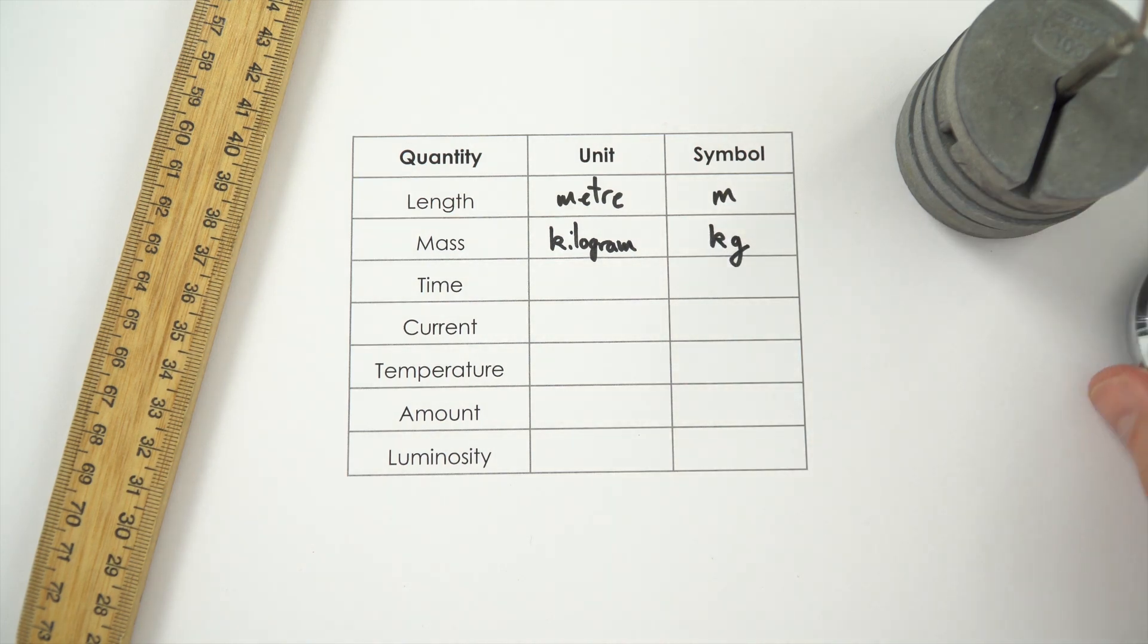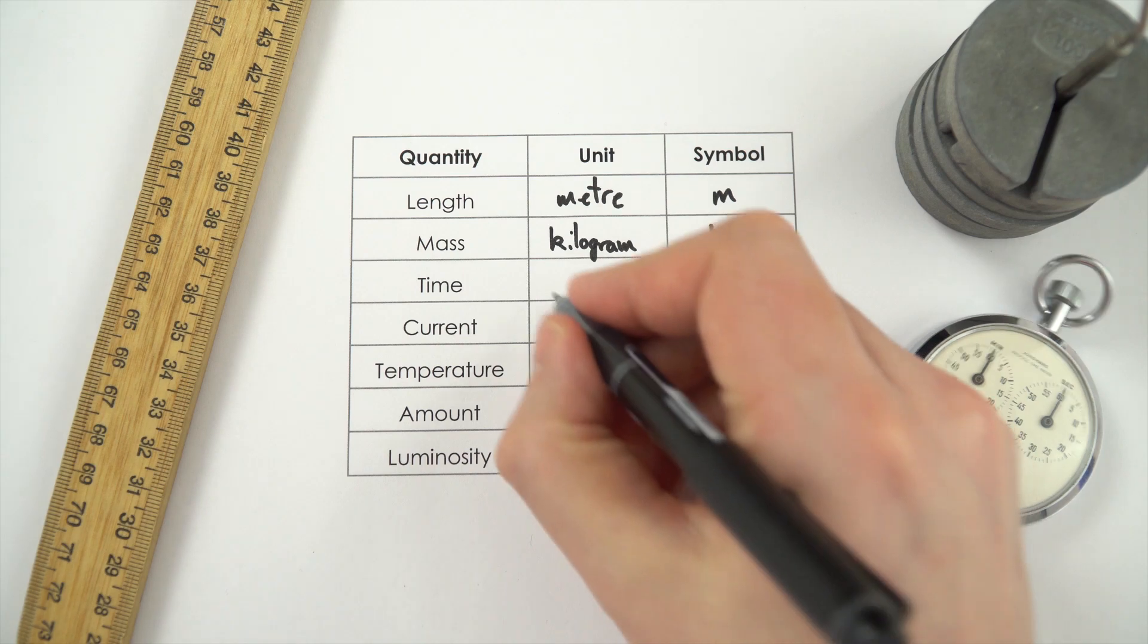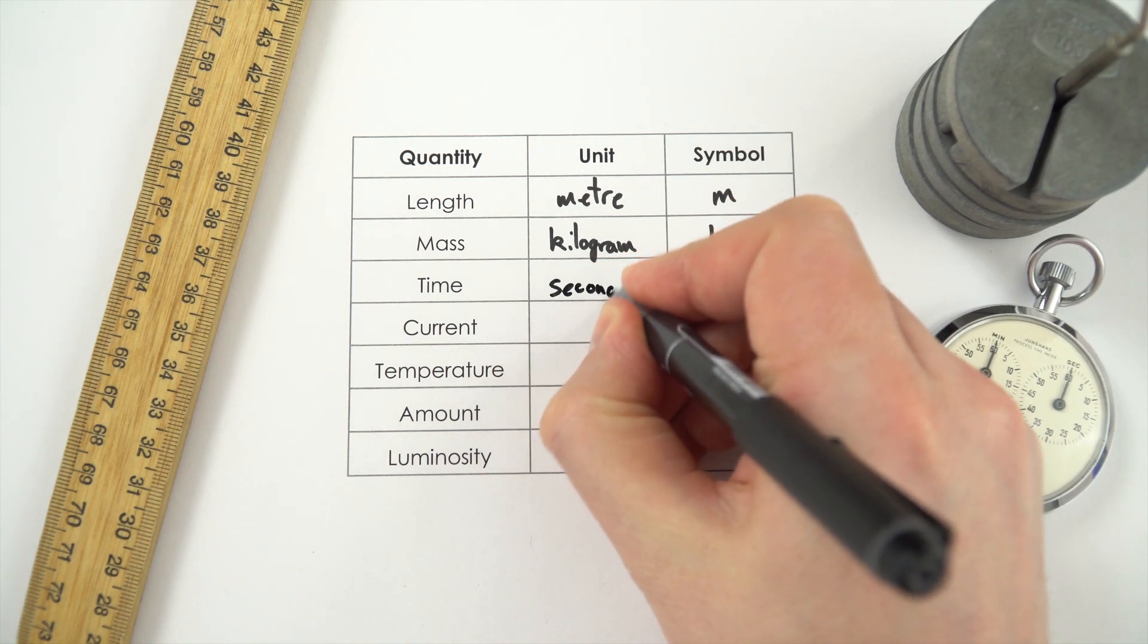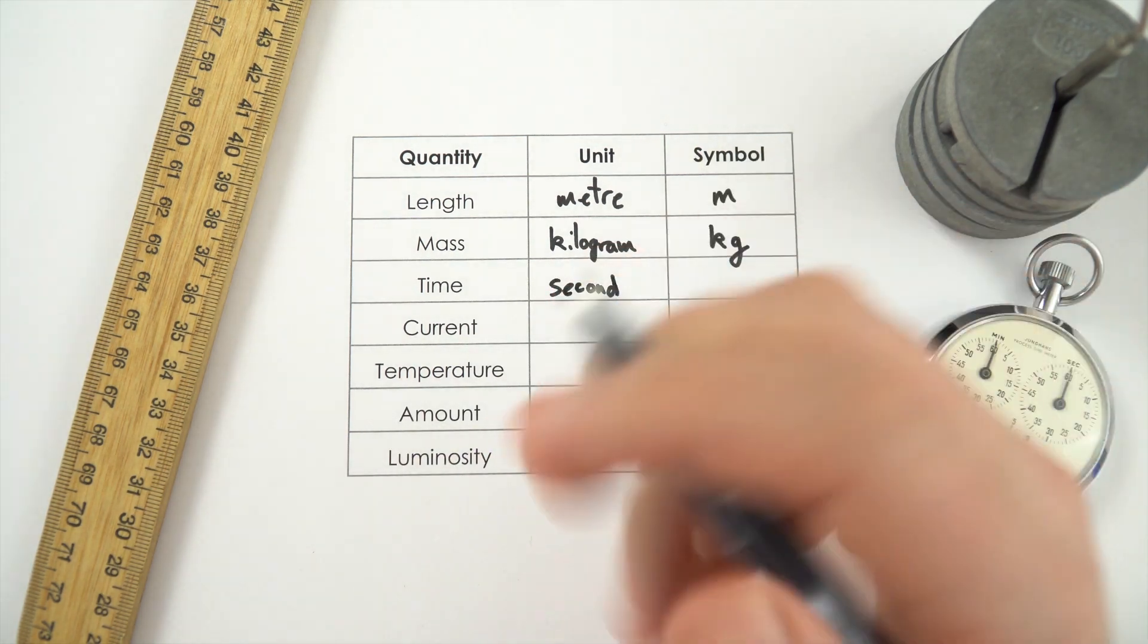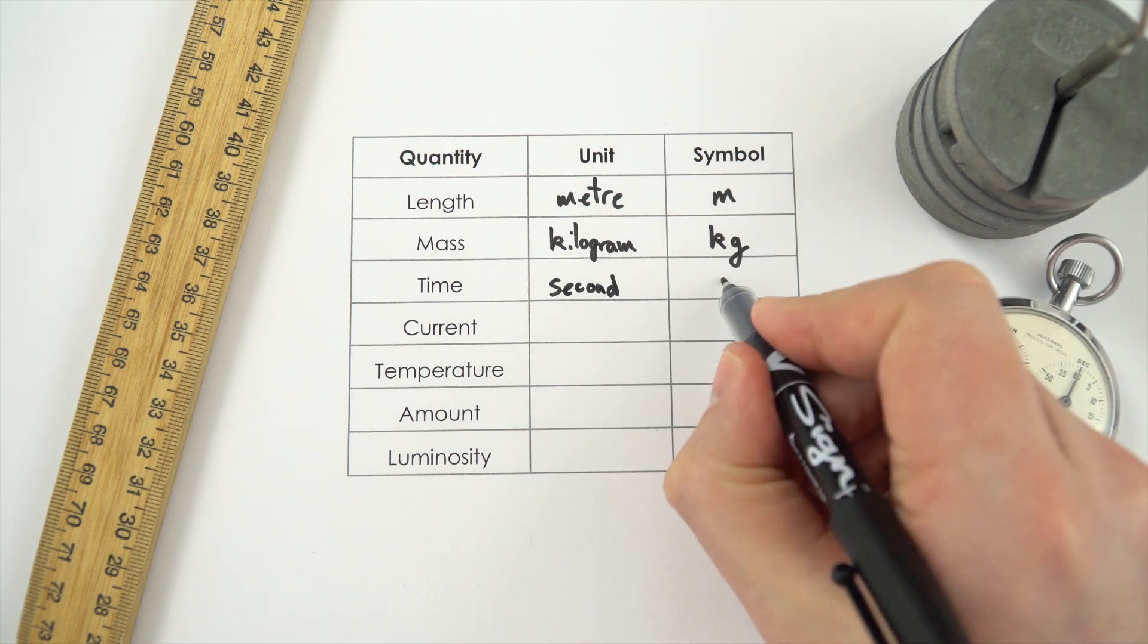We then have time measured in seconds. So if you've been given time in maybe hours or minutes always convert to seconds. That's a little s for that.